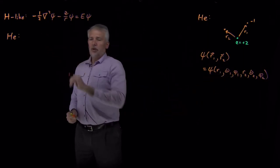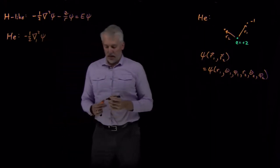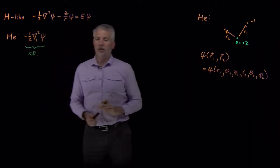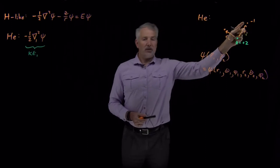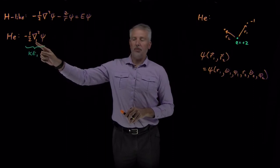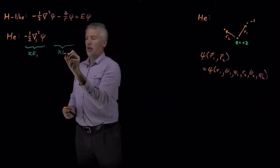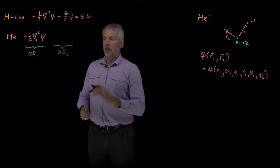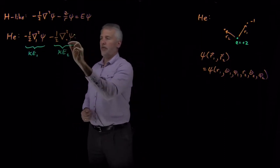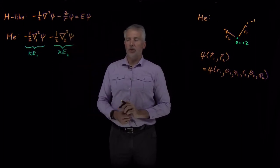In atomic units it's still not that difficult to write down. There are kinetic energy terms: electron one has some kinetic energy, and when talking about the kinetic energy of just this electron I don't need to worry about electron two at all — it's just the del-squared with respect to R1, θ1, φ1. Likewise, there's a kinetic energy term that looks very similar for electron two: minus one-half del-squared of the wave function, but these derivatives are with respect to R2, θ2, or φ2.